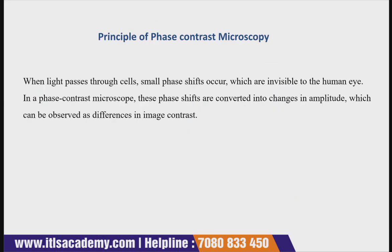When light passes through a cell, small phase shifts occur which are invisible to the human eye. In a phase contrast microscope, these phase shifts are converted into changes in amplitude, which can be observed as differences in image contrast.